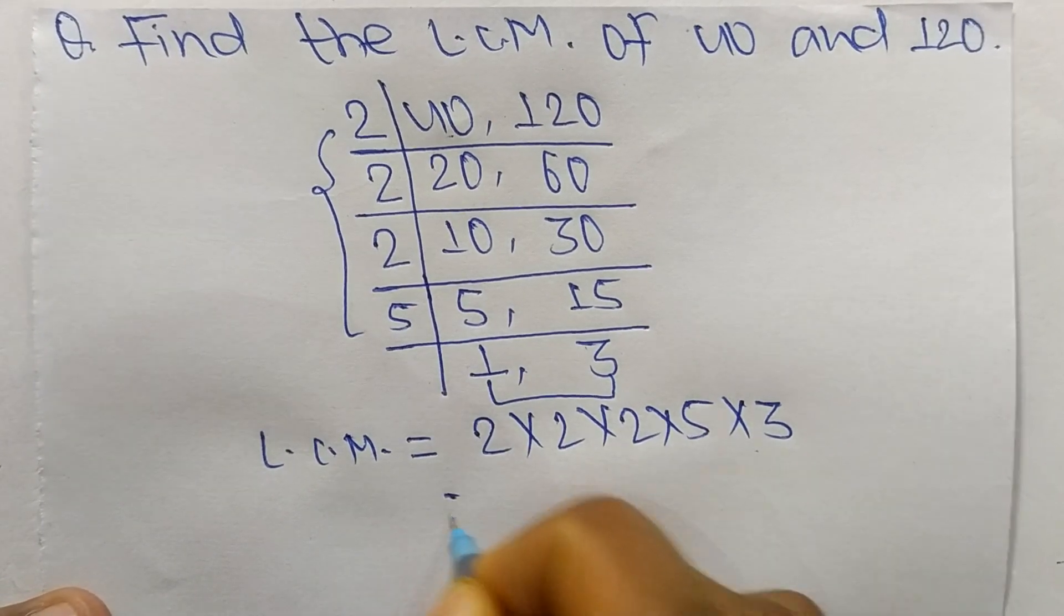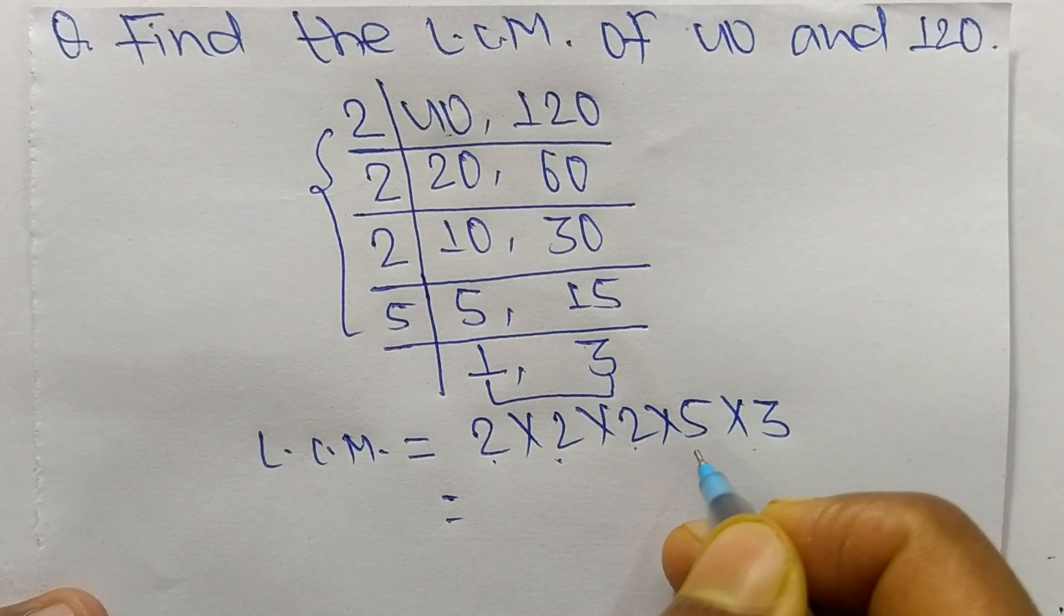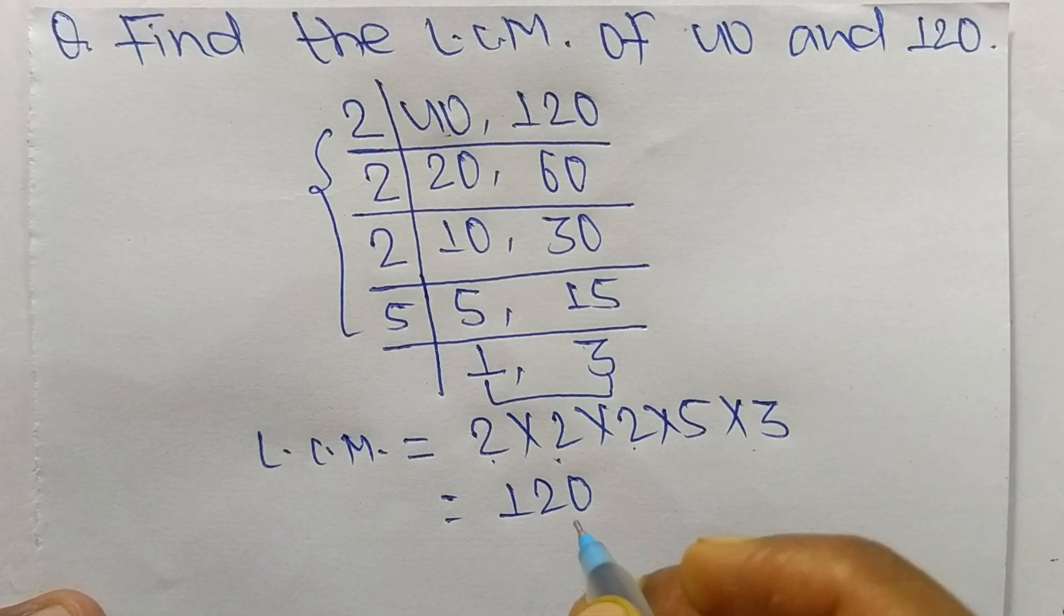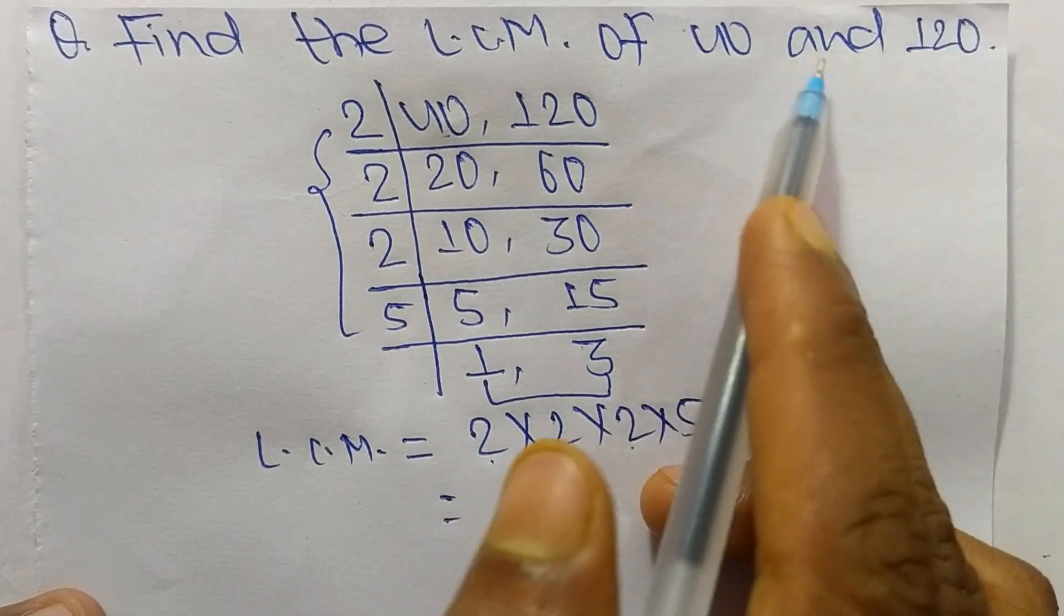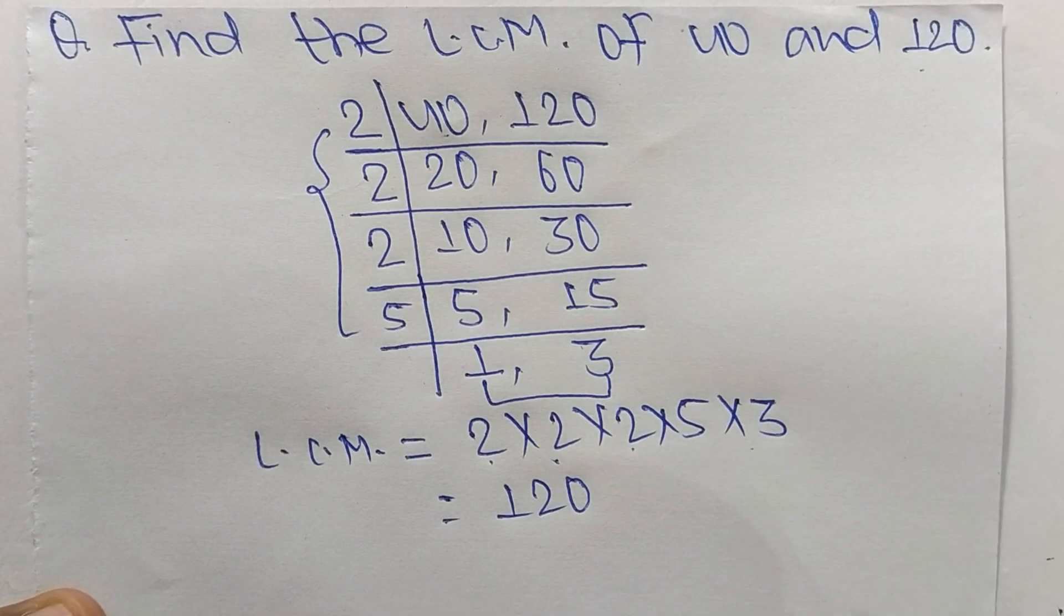So 2 times 2 mean 4, 4 times 2 mean 8, 8 times 5 mean 40, 40 times 3 mean it is 120. So 120 is the LCM of 40 and 120. So this much for today and thanks for watching.